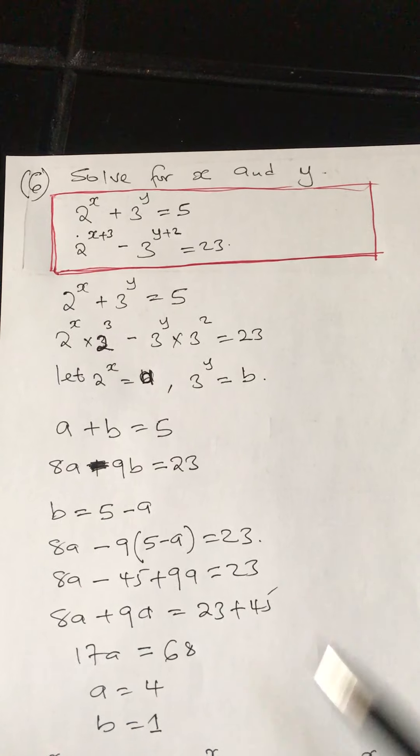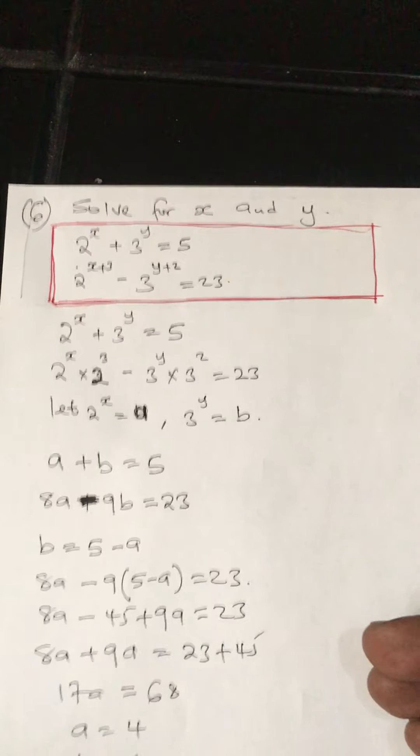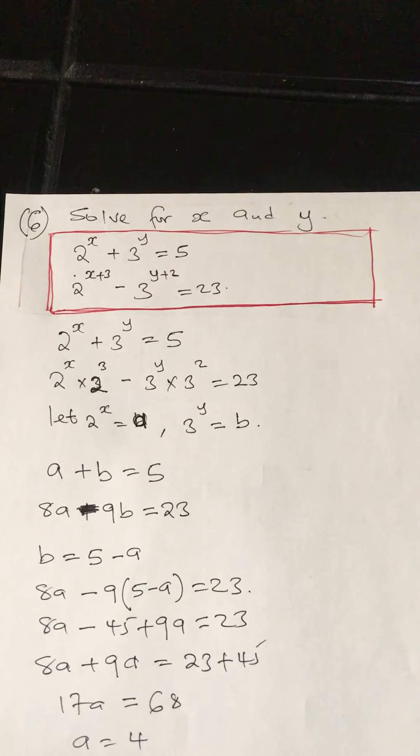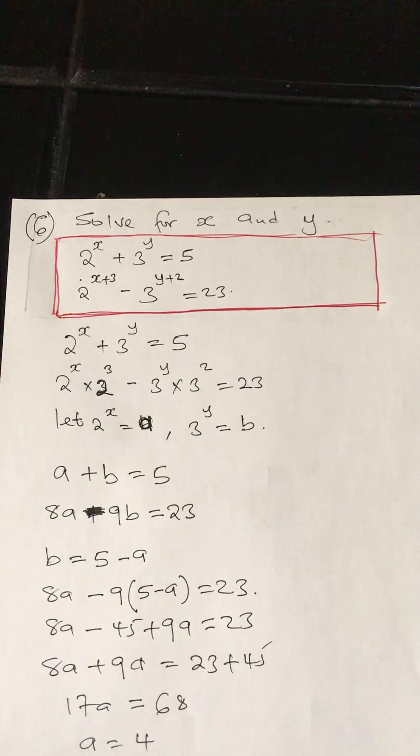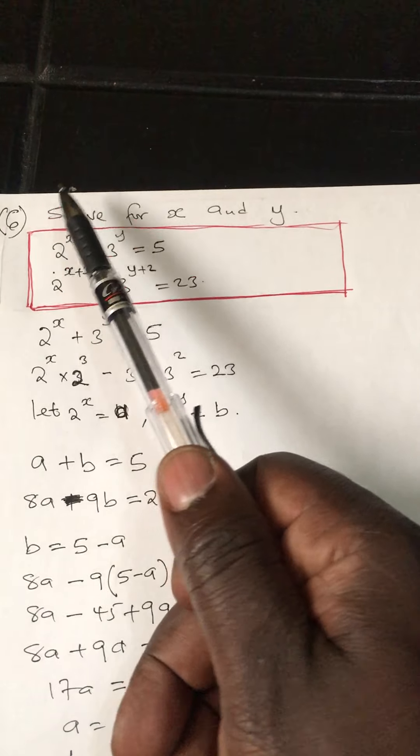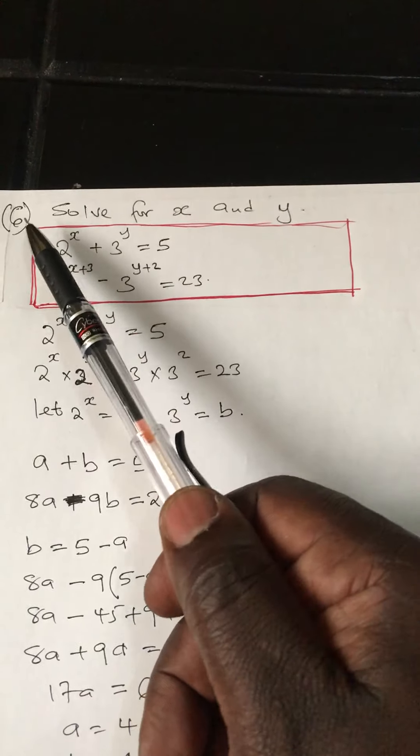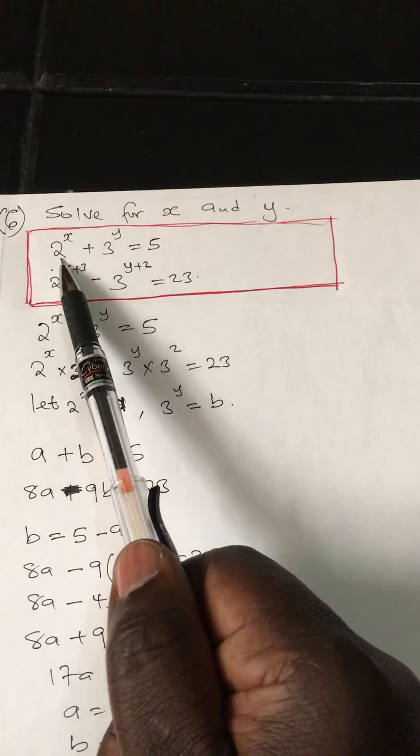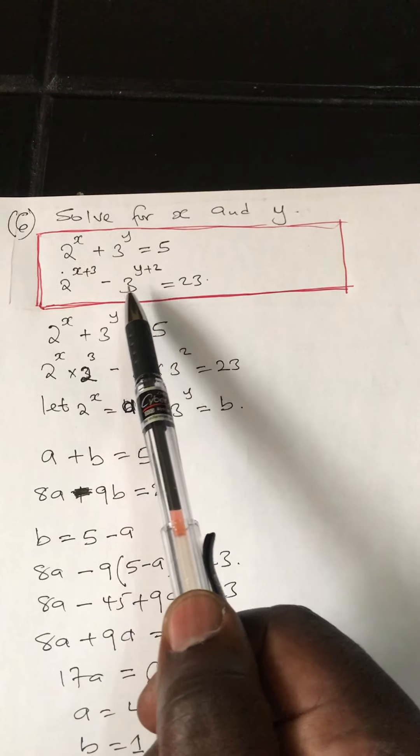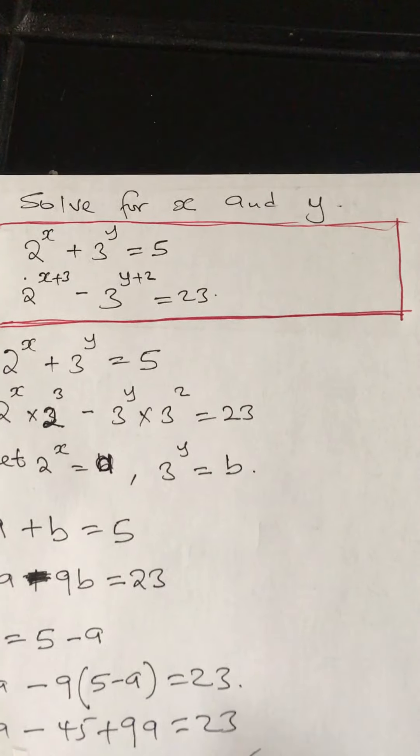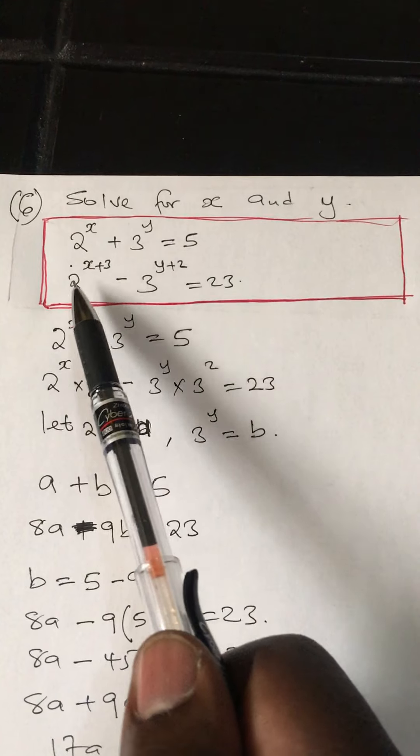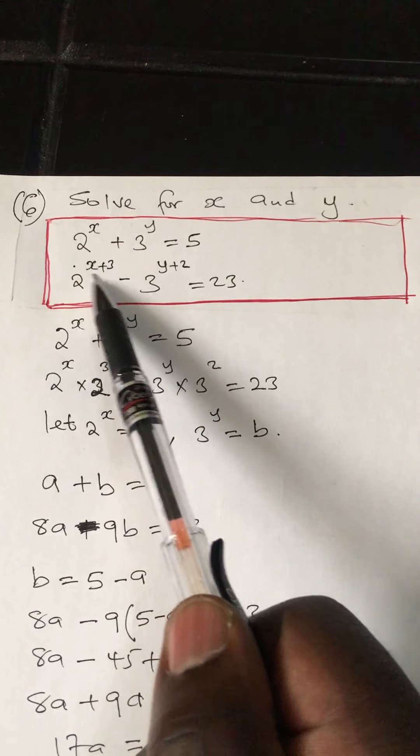Next example: such questions may not really require logs as such - maybe indices too. Sometimes you never know. You can get values, then proceed. At the end, it moves into logs, and that's why we're doing this question in this case. Here, they want you to solve for x and y: 2 raised to x plus 3 raised to y equals 5, and 2 raised to x plus 3 minus 3 raised to y plus 2 equals 23.